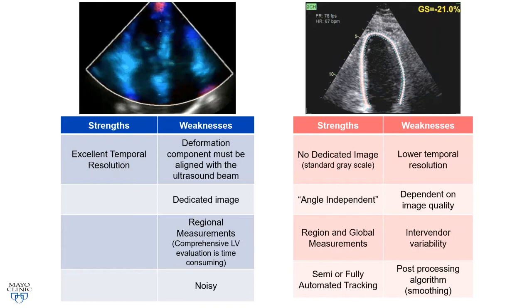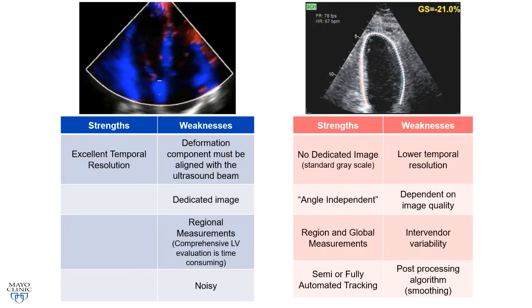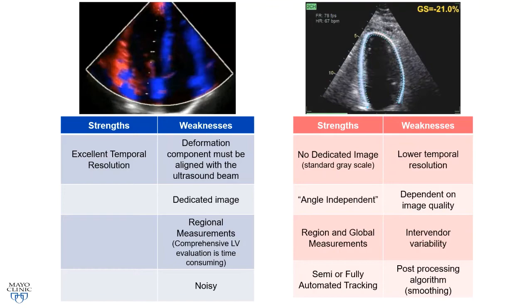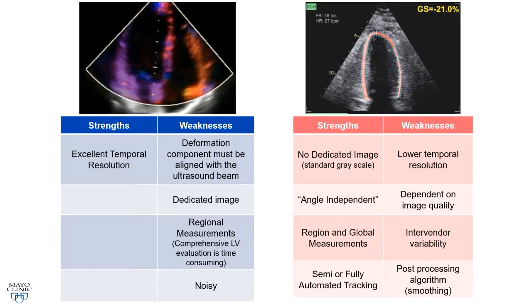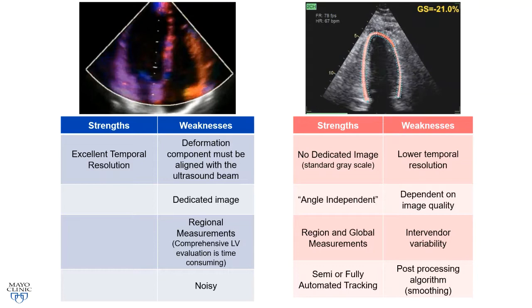An apical three chamber view and a subcostal three chamber view yield very similar derived parameters of global longitudinal strain, highlighting that speckle tracking is somewhat angle independent. The strengths of Doppler tissue imaging are excellent temporal resolution, but deformation must be aligned to the ultrasound beam, it requires a dedicated image, and comprehensive evaluation is time consuming and noisy. Speckle tracking can be done from a standard grayscale image. It has slightly lower temporal resolution but is angle independent, allows regional and global measurements, and now features semi- and fully automated tracking algorithms, though there is intervendor variability.